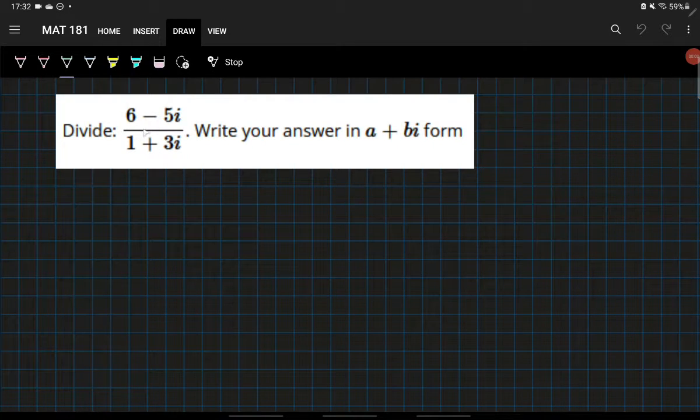When we're asked to divide two complex numbers like this, we always want to write it in the form a plus bi. However, this is not in the form a plus bi.